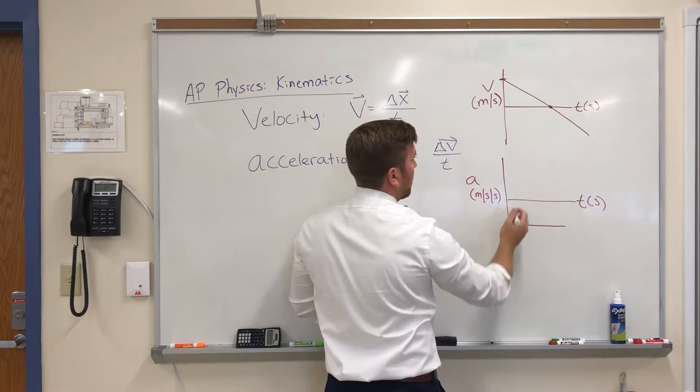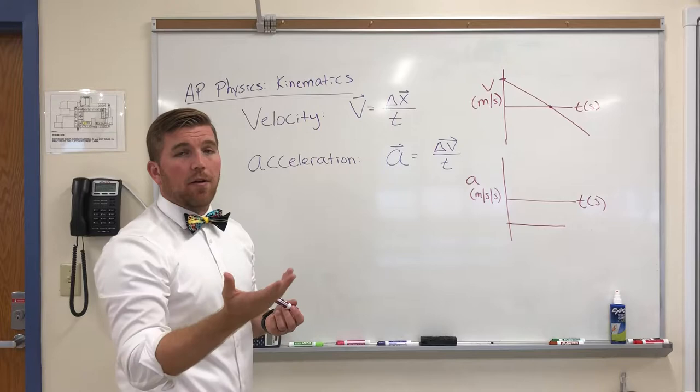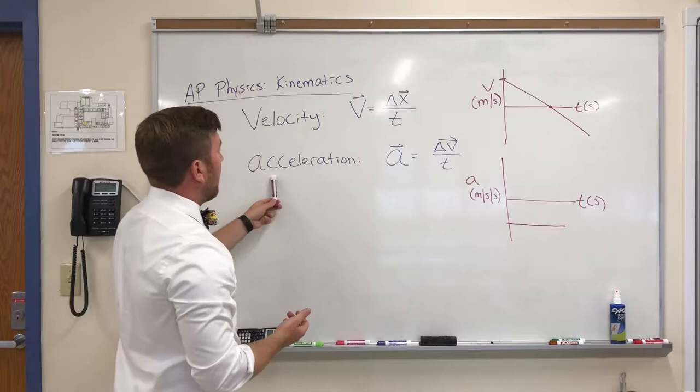And if we use the example from before, we know the acceleration of gravity is negative 9.8 meters per second per second. This is exactly where that would be on the line. Because the only thing that's accelerating, once it leaves my hand, would be gravity.